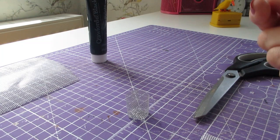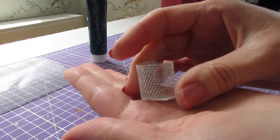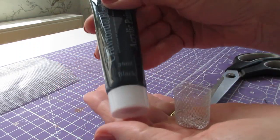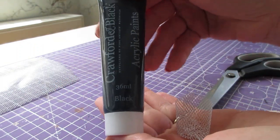So there's our little waste paper bin. Now you can leave it silver if that suits your scene, but otherwise you can add a coat of paint, and for that I'm going to be using a black acrylic paint.